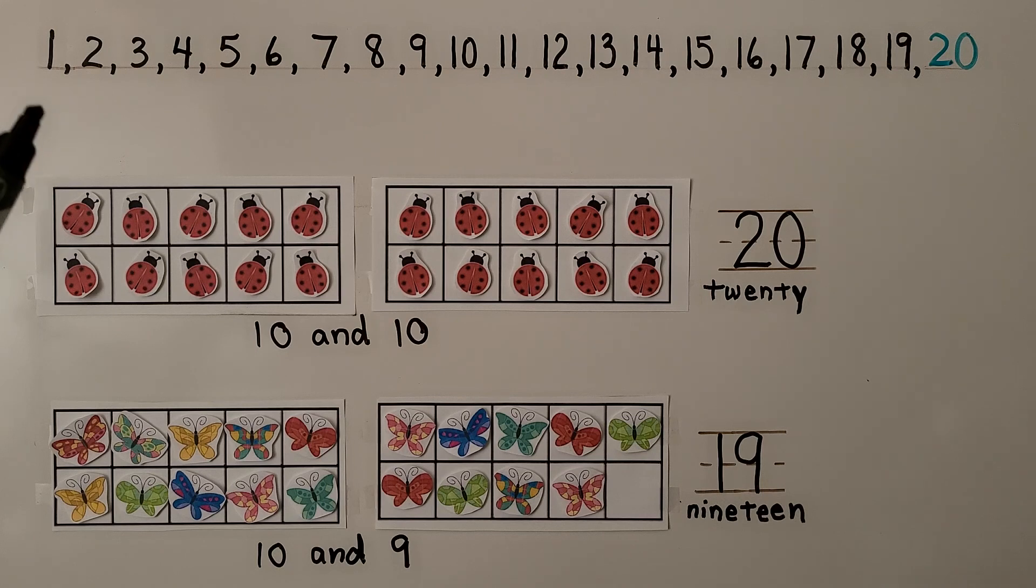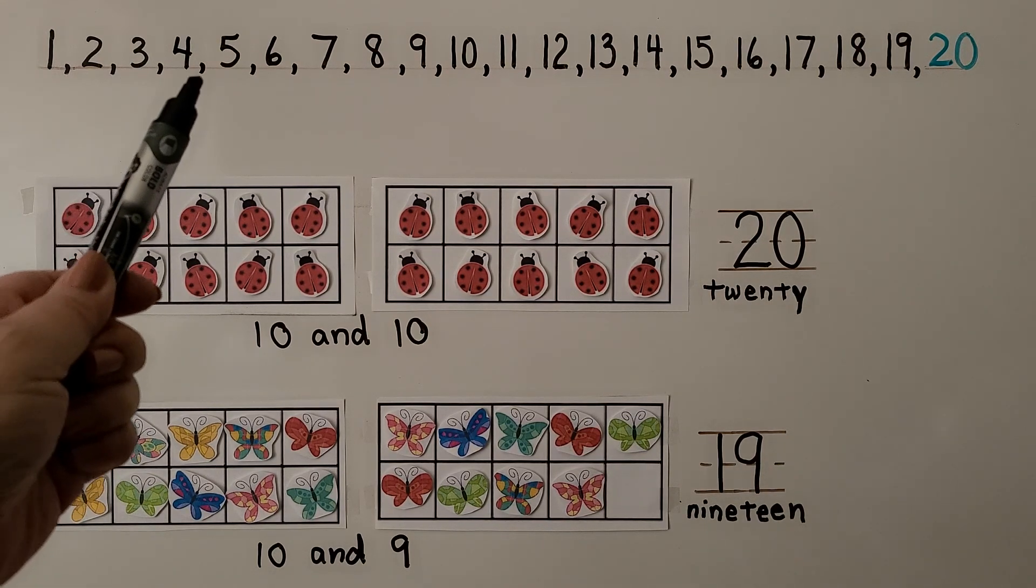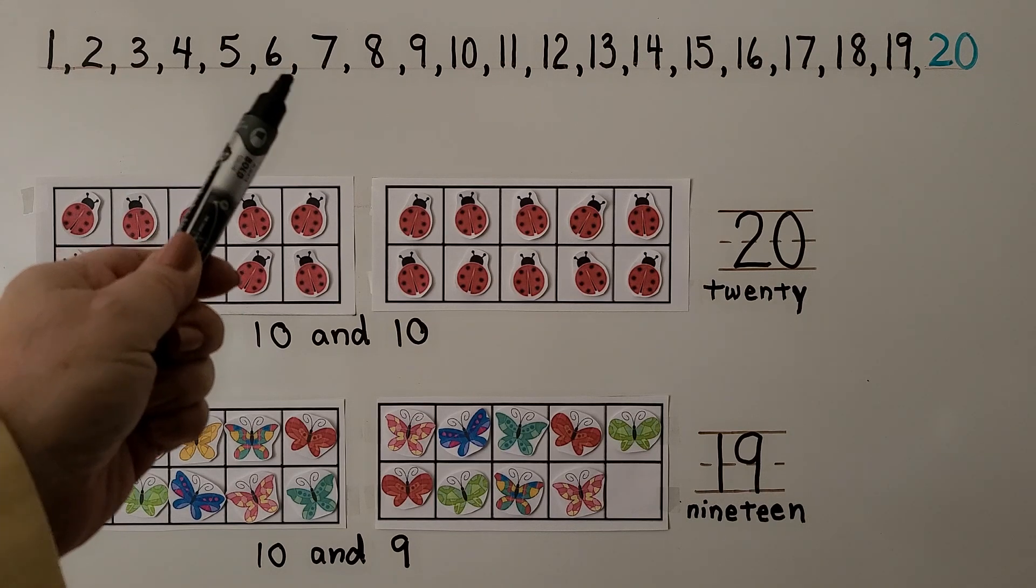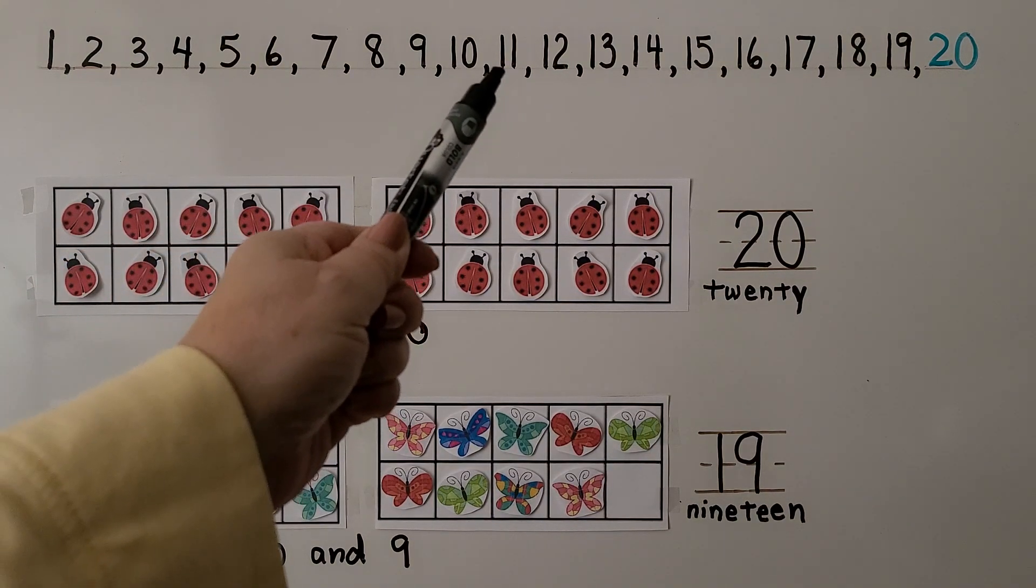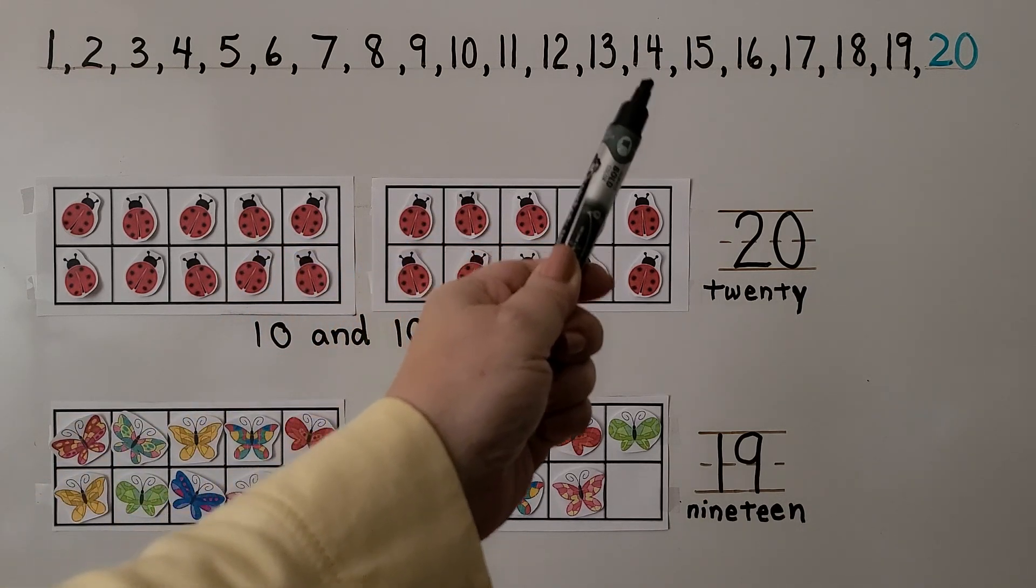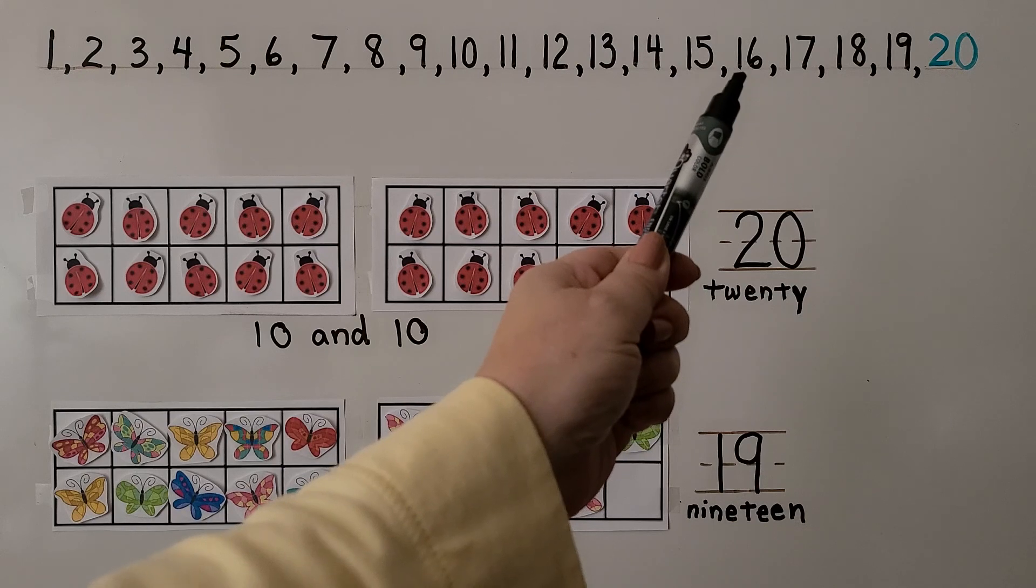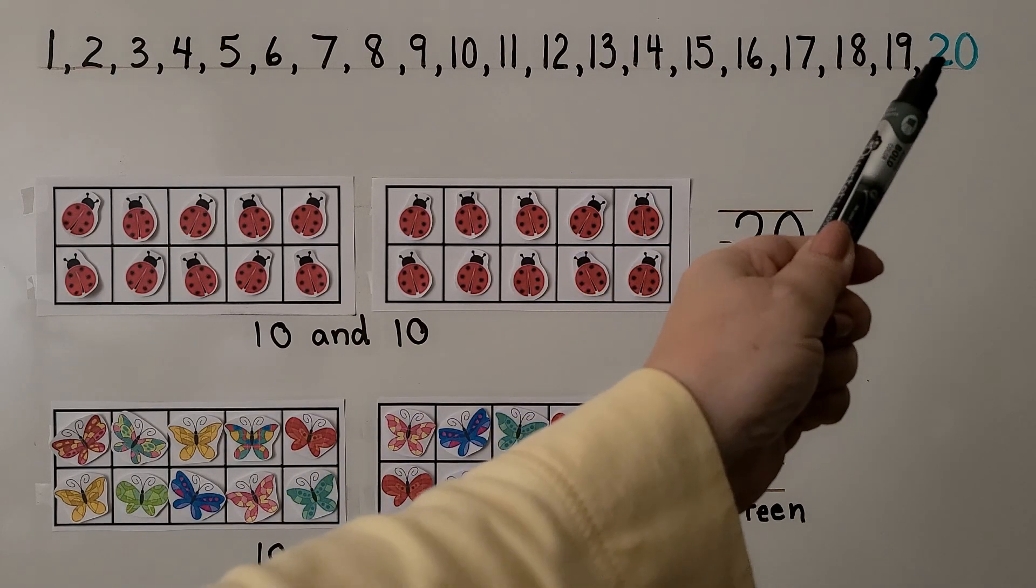You can count to 20 with me. 1, 2, 3, 4, 5, 6, 7, 8, 9, 10, 11, 12, 13, 14, 15, 16, 17, 18, 19, 20.